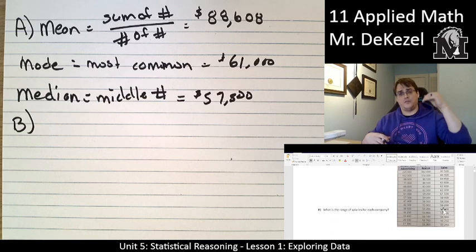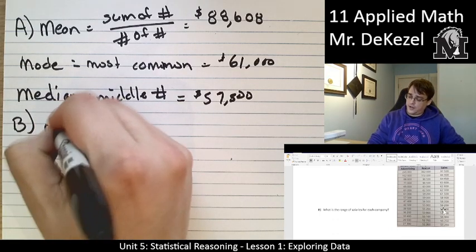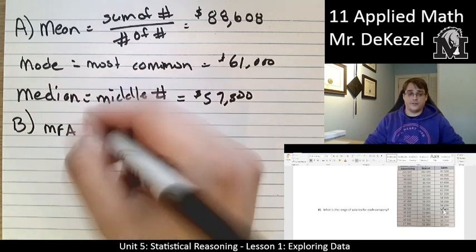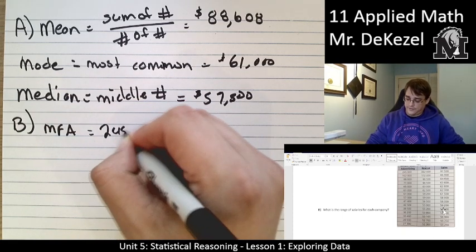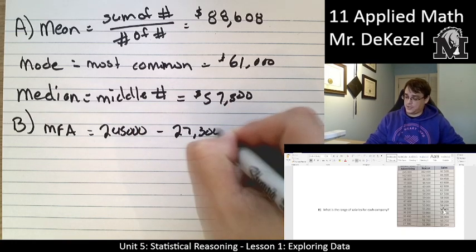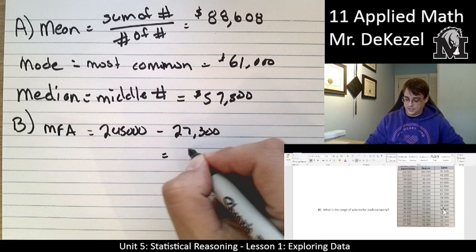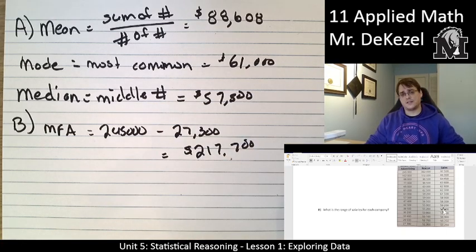Range, essentially, we take the highest value and we subtract the lowest one. For MFA, or Media-Focused Advertising, the highest is 245,000. We subtract 27,300 as the lowest and get a huge range of 217,700. That is a monster range in how much people get paid.